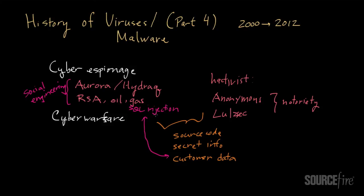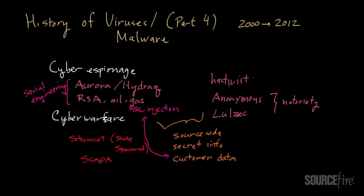Going beyond cyber espionage we have cyber warfare, which takes things to a whole new level. The most famous example is a threat called Stuxnet. Stuxnet got a lot of attention and what made it very interesting is that it appears to be — and has more or less been confirmed as — state sponsored. The evidence points to state sponsorship because of its technical sophistication: it had multiple zero day vulnerabilities. It targeted SCADA systems and specifically the Siemens S7-300 system and its modules, which were used within Iran's nuclear power program.